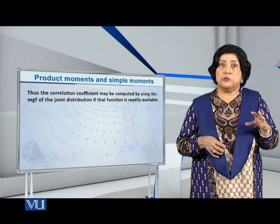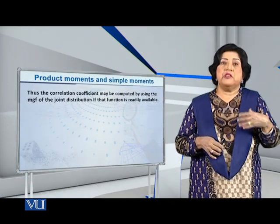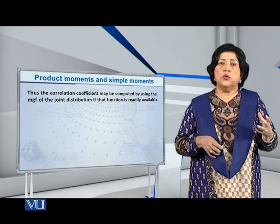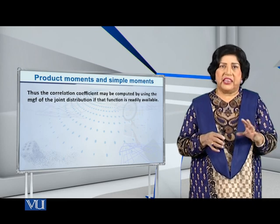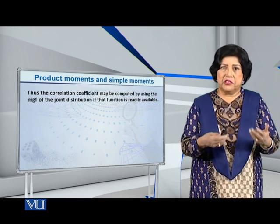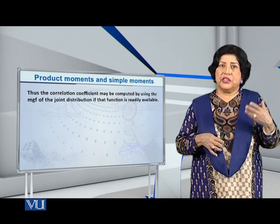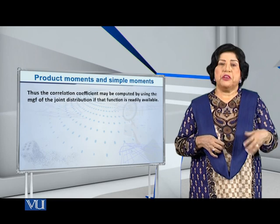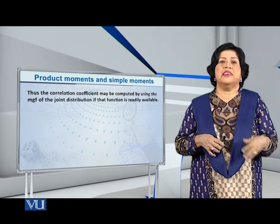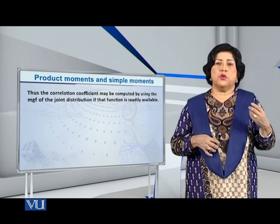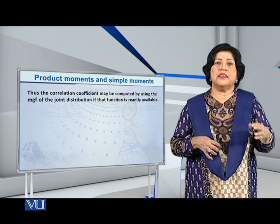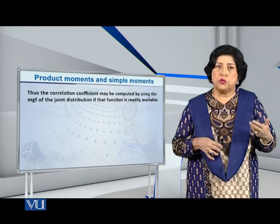Sometimes you know that MGF does not exist. In that case, all this discussion is not valid. But if the MGF is there, or if you can derive it very easily, then you can use it in this manner to find the means, the variances, the covariance, and the correlation coefficient. Let's do that. Thank you.